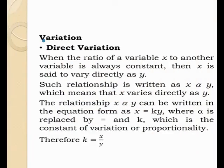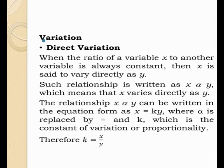What is direct variation? When the ratio of a variable X to another variable Y is always constant, then X is said to vary directly as Y. Such a relationship is written as X is proportional to Y. The relationship can be written in equation form as X is equal to KY, where the proportionality sign is replaced by equals and K, which is the constant of variation or proportionality. Therefore, K is equal to X over Y.